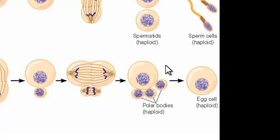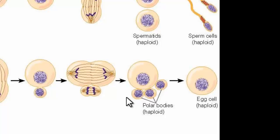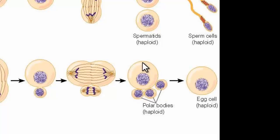All the cytoplasm is being squeezed into that main cell. The interesting thing is that we end up with one functional cell. These three cells around the outside are polar bodies. They are all haploid, but these three cells aren't functional cells. The resulting egg cell will come from this single cell here.